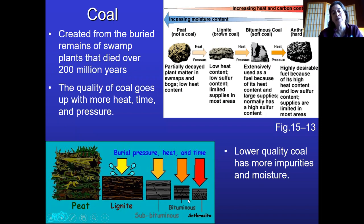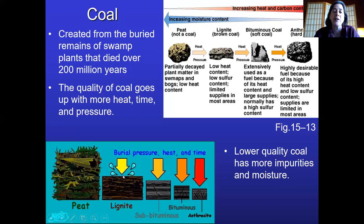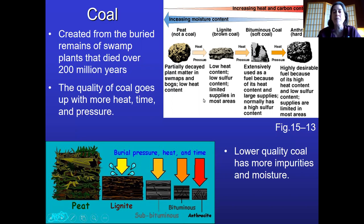If you get all the way down to anthracite, where it's been buried, compressed, and heated for the longest period of time, you have the nicest quality coal. Stuff that's closer to peat is going to have a lot of impurities and moisture content. The graphic from your book shows that those higher up on the scale are not going to be as high quality coal. So when you talk about burning coal, you also have to talk about what kind of coal you're burning.